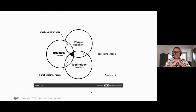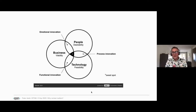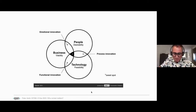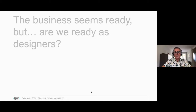Most companies we work with have business and technology as dominant forces, and desirability is what we should make more stable and impactful. It's quite clear, as Andy and Jay already stated — business seems ready, but are we ready as designers to validate what we're doing?